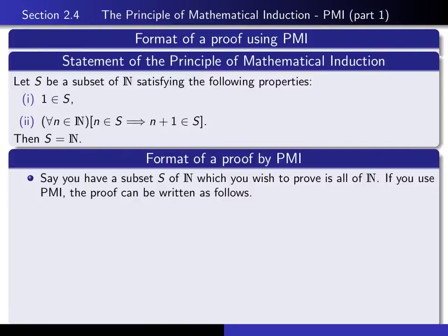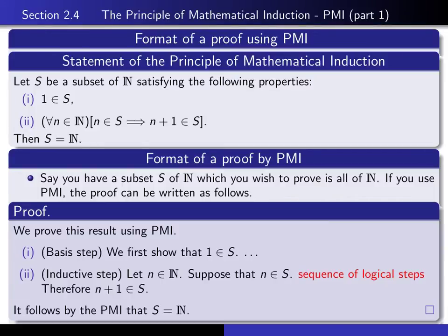How might we apply the principle of mathematical induction to prove a theorem about the natural numbers? Suppose we have a subset S of the natural numbers and our intention is to prove that it's all of the natural numbers. Using the principle of mathematical induction, all we have to do is verify those two conditions. We start by stating we'll use PMI, then the first paragraph — the basis step — verifies that 1 is an element of S.